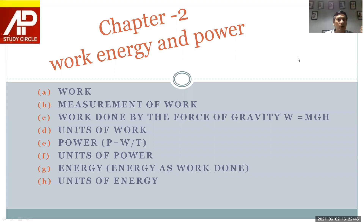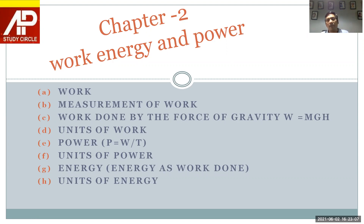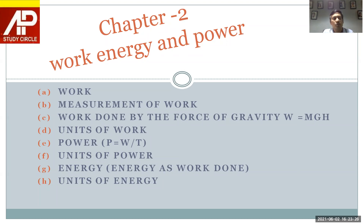We are going to study about work, measurement of work, and work done by the force of gravity. The units of work — we are relating three things in order: work, energy, and power. Work and energy are the two faces of the same coin. When we do work we spend energy, and when we have energy we can do work on some other object. We will also discuss why force and work done are different.